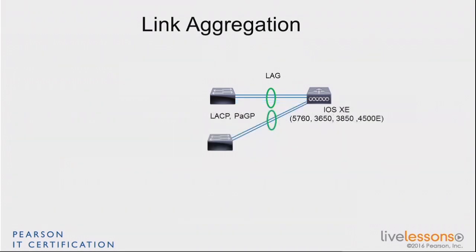This is a difference with another OS used for control management of access points — iOS XE, found on platforms like the 5760, 3650 switch, 3850 switch, and 4500E switches. Because they run iOS, there are big differences from Aeros. The first difference is that you can do more than one LAG — two or more. You can take some groups of ports and do one LAG, and other groups and do another LAG. The other difference is that because they're on iOS, they can negotiate LAG modes using LACP or PAGP when connected to switches.